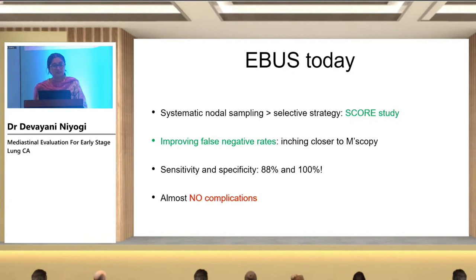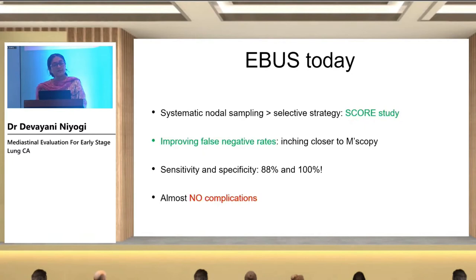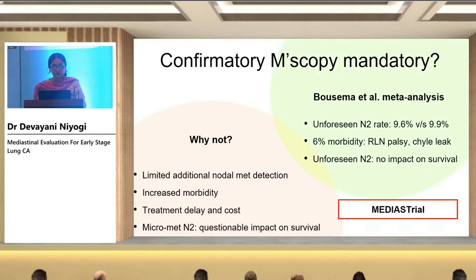Let's see the journey EBUS has traversed from 2004 to 2022. False negative rates in most centers have become better and better, inching closer to the gold standard — mediastinoscopy. Sensitivity and specificity from some South Korean series are 88% and 100%, actually better than mediastinoscopy, with almost no complications. A recent paper — the SCORE study — showed that systematic nodal sampling, diligently going to each station and sampling any node over 5mm, gives better results than a selective strategy targeting only PET-positive nodes.